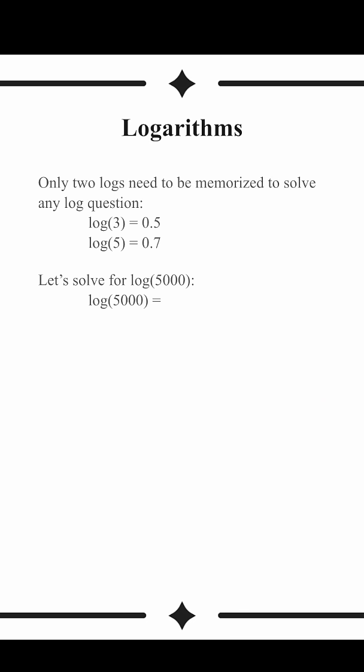Where should we begin solving for log 5000? If you watched my last short, you know we should break it down into scientific notation first. Let's turn it into log 5 times 10 to the third.